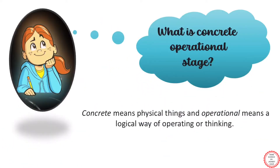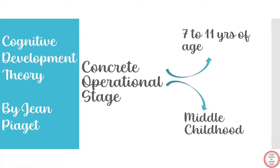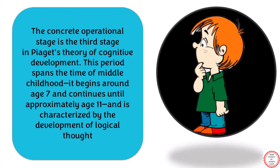Before starting the concrete operational stage, let's understand its meaning first. Concrete means something which is physical, and operational means logical. So we can say that children start using logical thinking during this phase. Basically, this stage is a transition stage between the earlier two stages of cognitive development and the fourth stage. Piaget believed the concrete stage to be a turning point in a child's cognitive development, because from this stage onwards, the child begins to use logical thinking.